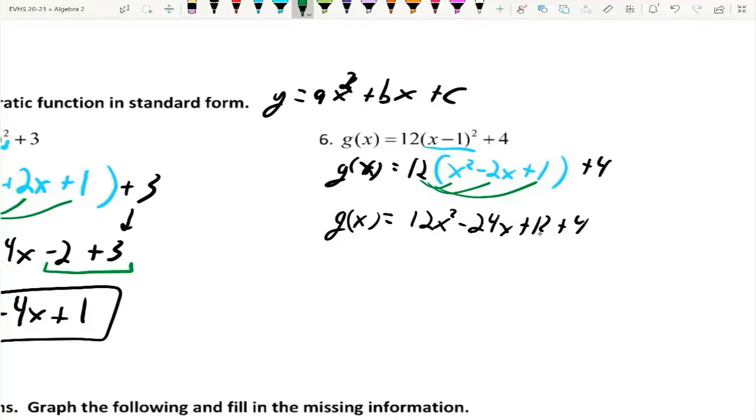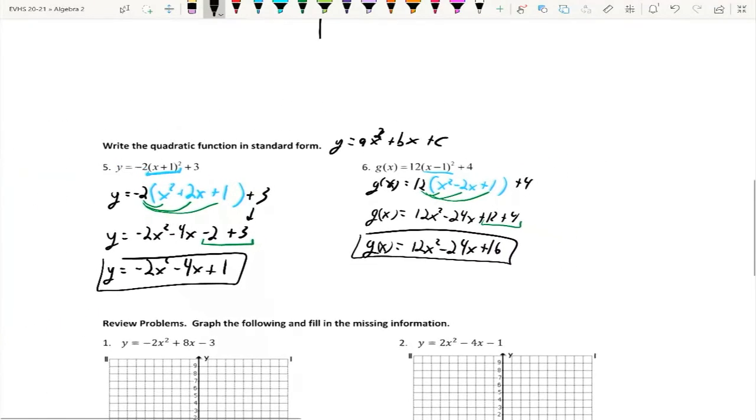And now, combine our like terms. g(x) is equal to 12x² - 24x, 12 and 4 make 16.